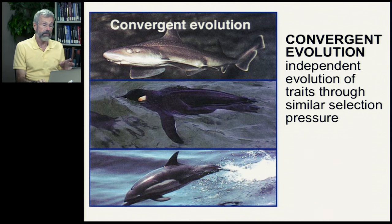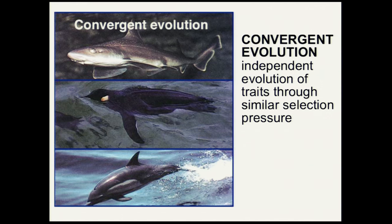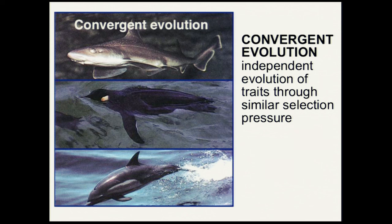Another classic example of convergent evolution is being able to move quickly through the water. We have a shark at the top, a penguin in the middle, and a dolphin at the bottom — a fish, a bird, and a mammal. They each evolved that streamlined shape allowing them to move rapidly through the water separately and independently. Penguins' ancestors lived on land for tens of millions of years shaped like ordinary little birds, and only after going back into the water did they develop that streamlined shape. Dolphins are actually related to pigs, and they evolved a shape very similar to a shark long after they had diverged. It's not common ancestry that gives the common shape — it's convergent evolution. These traits are called analogies.